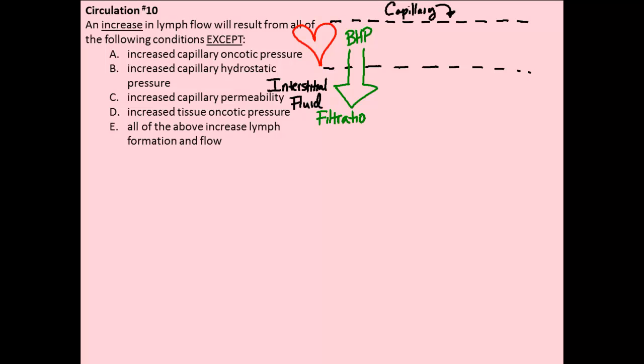If BHP were the only factor, we would lose all of our fluid out of blood vessels. So there must be something else operating to bring fluids back. That's the blood colloid osmotic pressure, which exists because large molecular weight proteins inside the blood vessel cannot pass out through the endothelial cell clefts. Water is attracted back to those proteins by osmosis, and this is the main pressure promoting reabsorption.